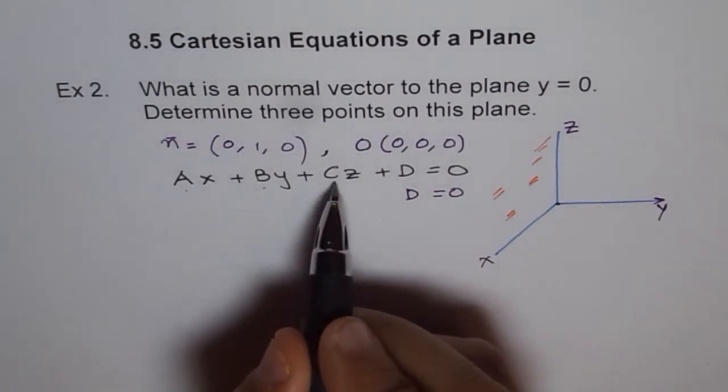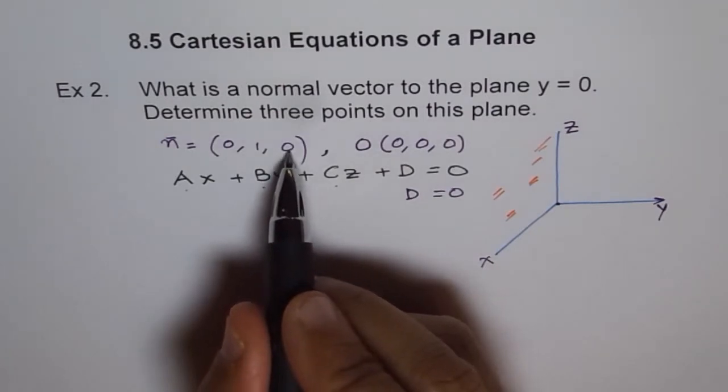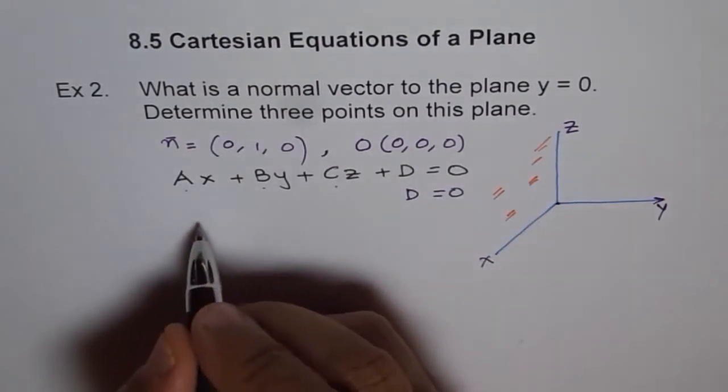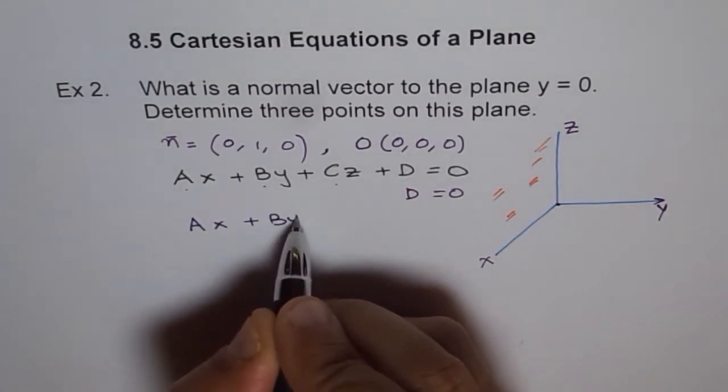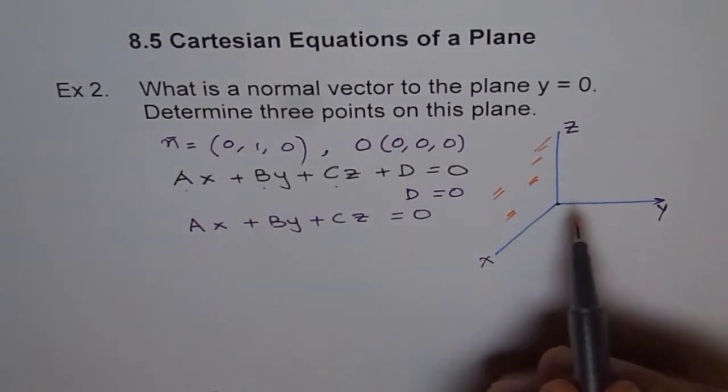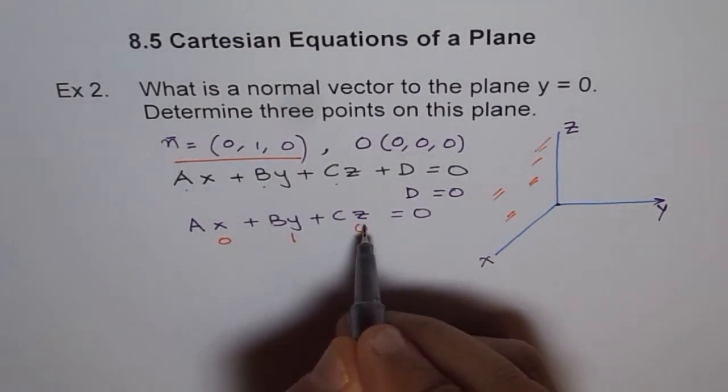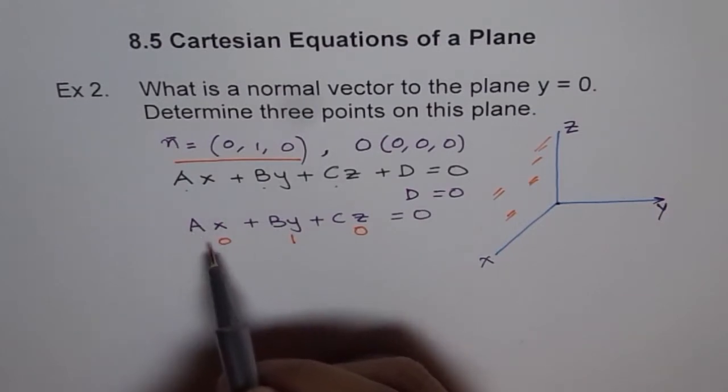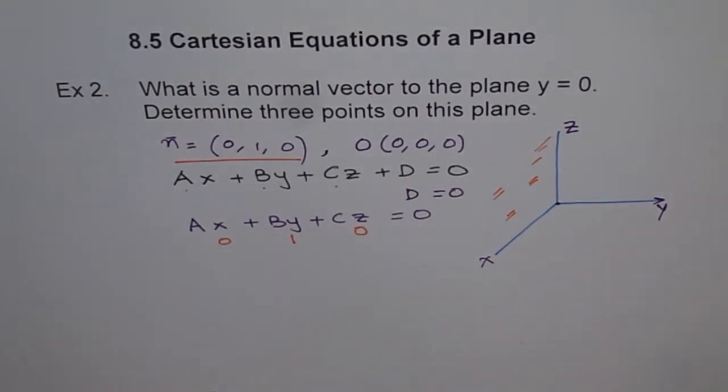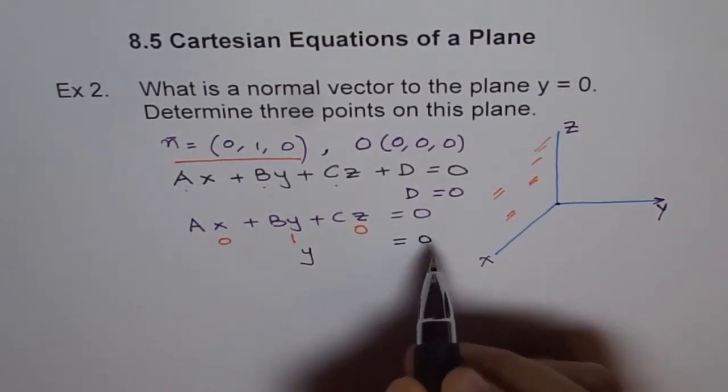So I get the equation Ax plus By plus Cz equals 0, where A is 0, B is 1, and C is 0. So let me do it in steps. First we put origin there and we get D equals 0, so we get our equation Ax plus By plus Cz equals 0. And once we plug in our normal, the normal we found is y-axis. And if I write 0 for A, 1 for B, and 0 for C, we are left with y equals 0. And that is the equation we are talking about.